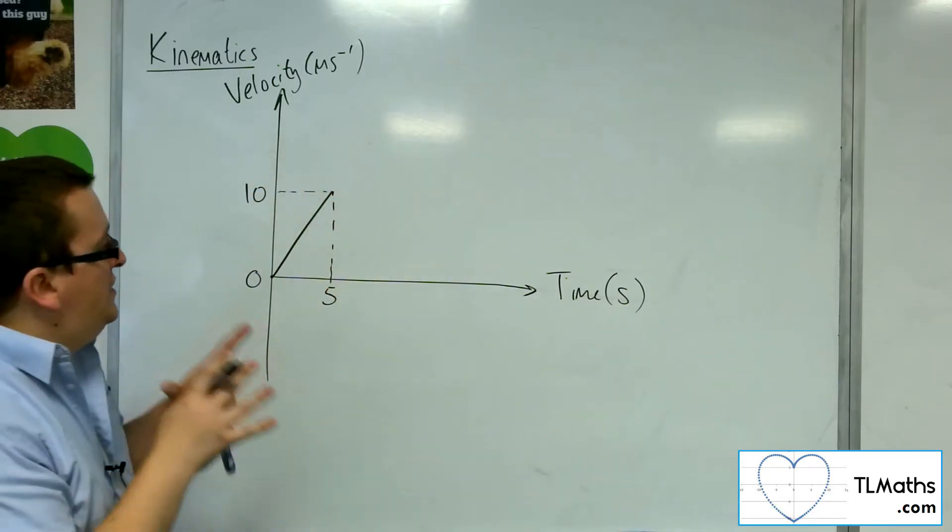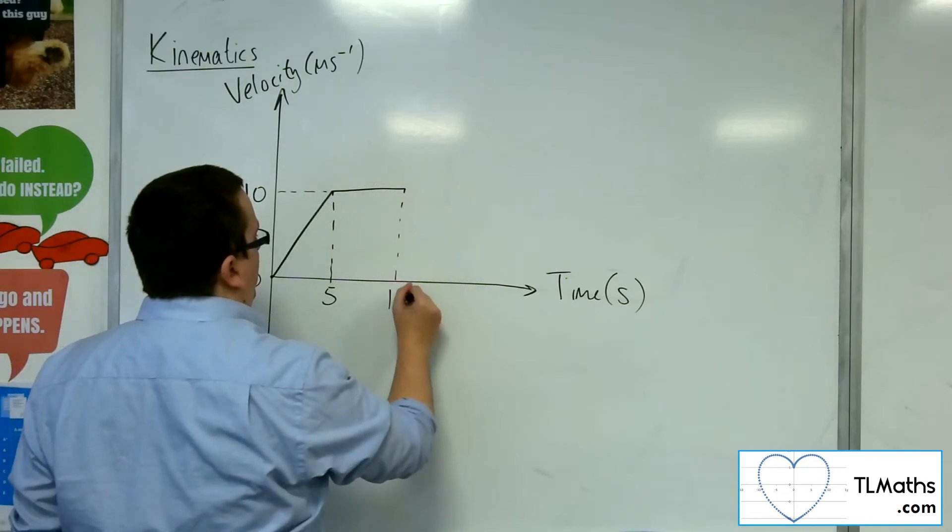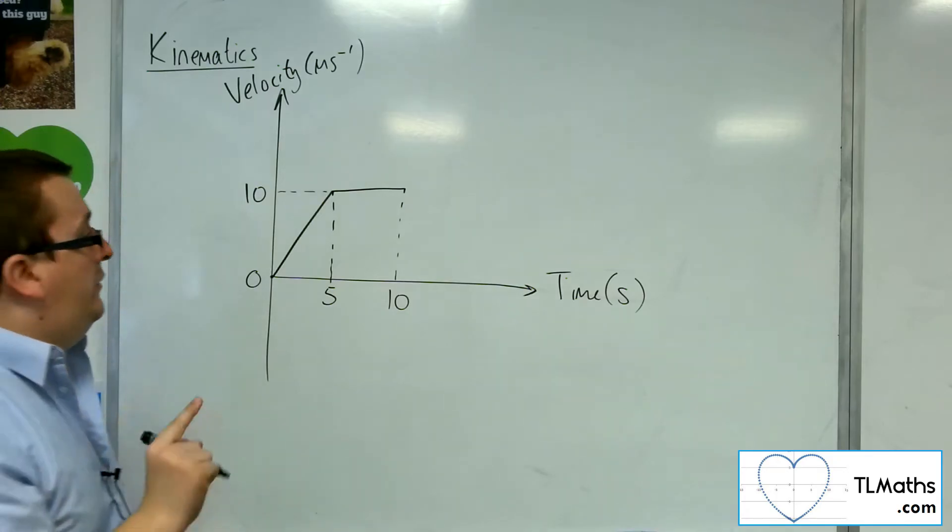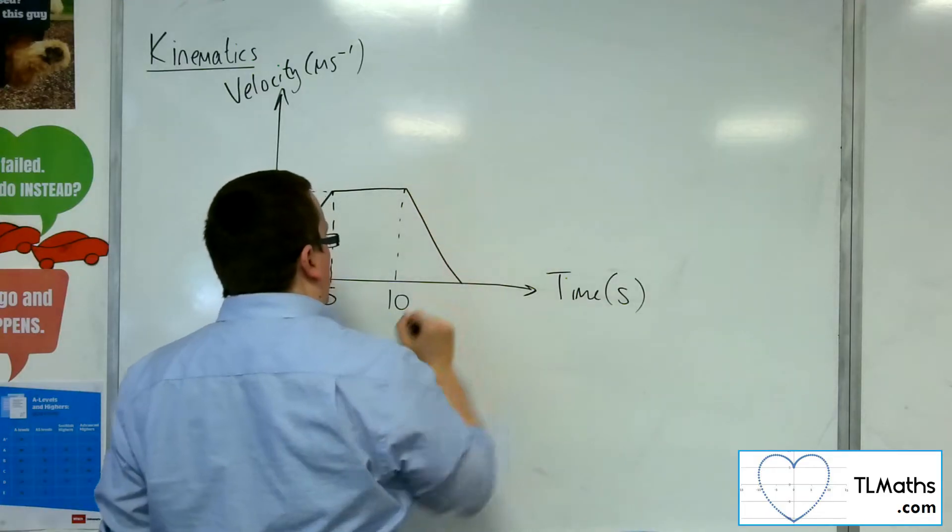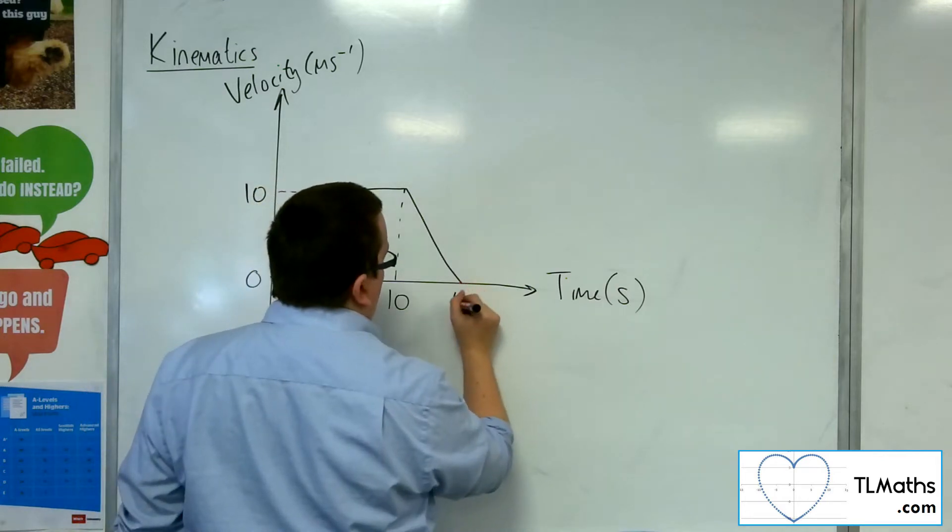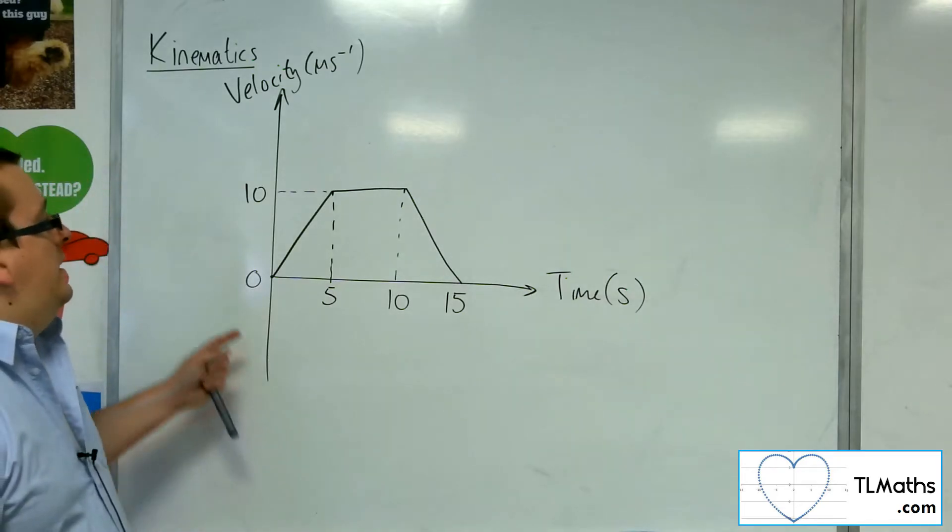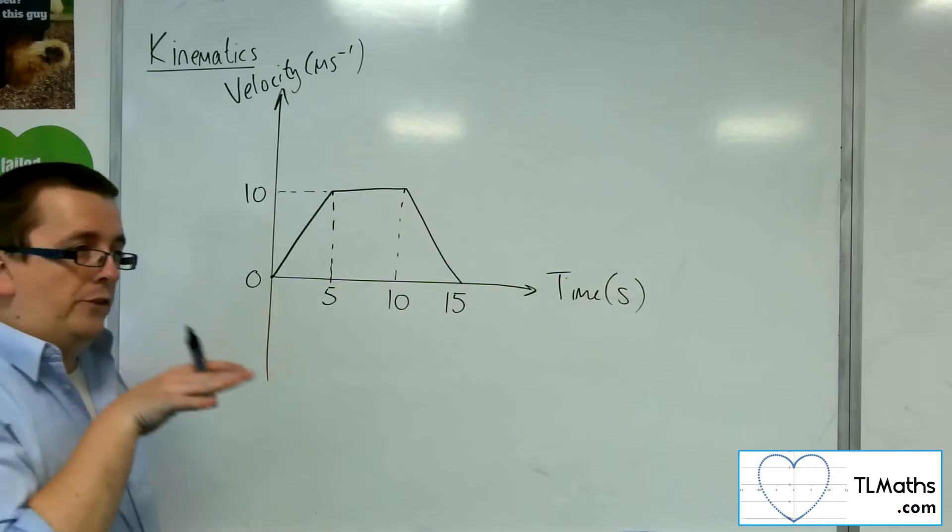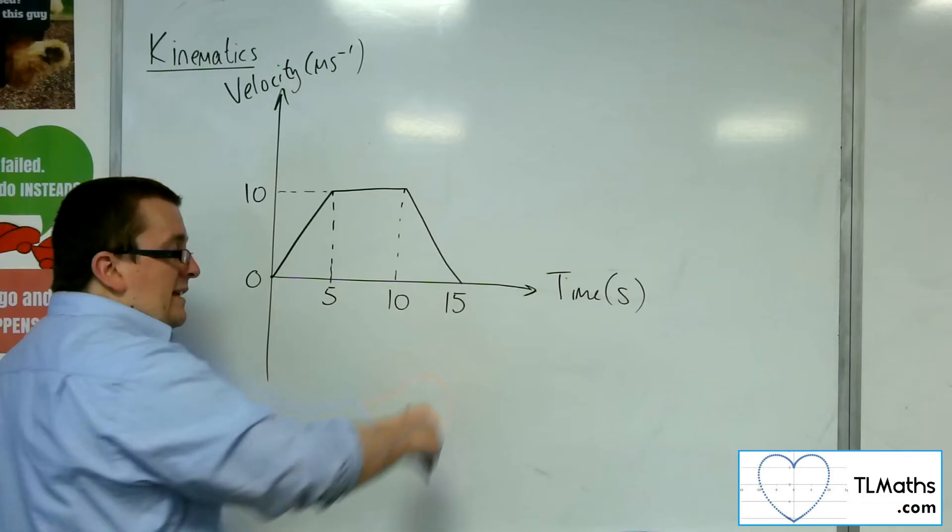It then continues at this speed for another five seconds. It then decelerates. Let's say in the next, let's go with five seconds again. So up to 15 seconds, that makes it. So it has accelerated up to 10 metres per second. It then travels at 10 metres per second and then decelerates down to zero again. So at this point, it is stationary.